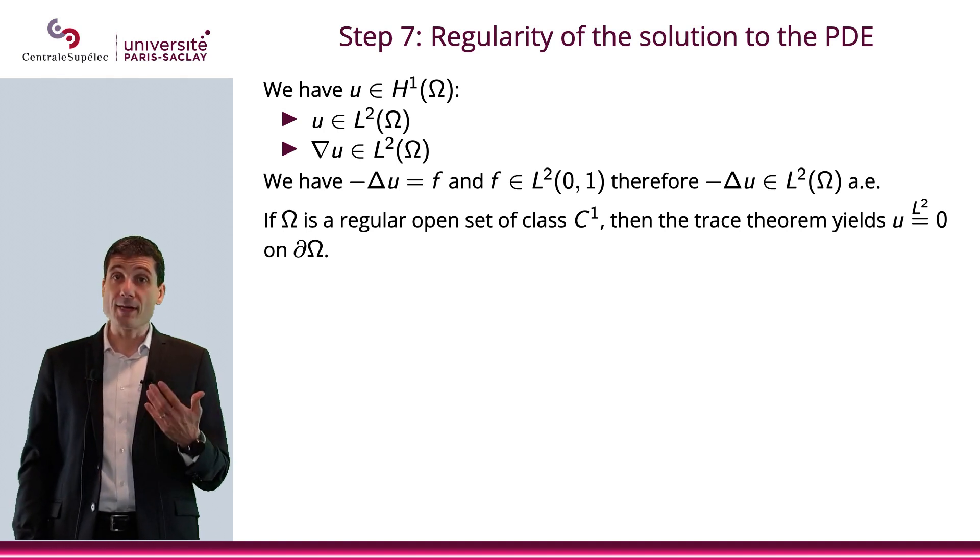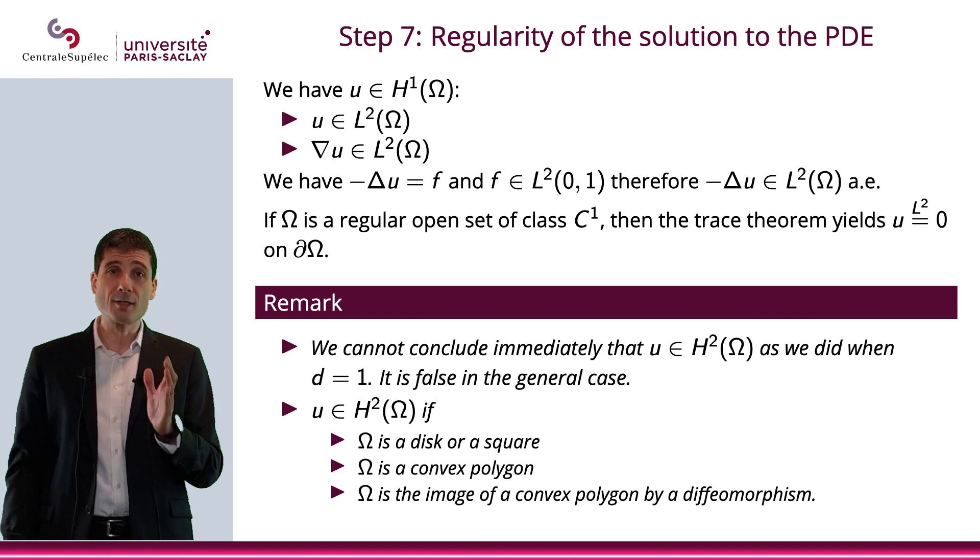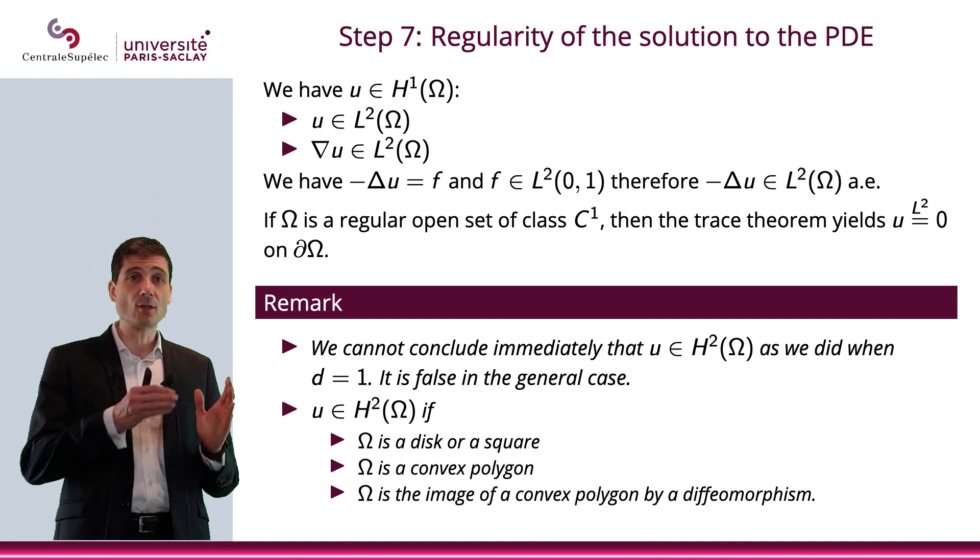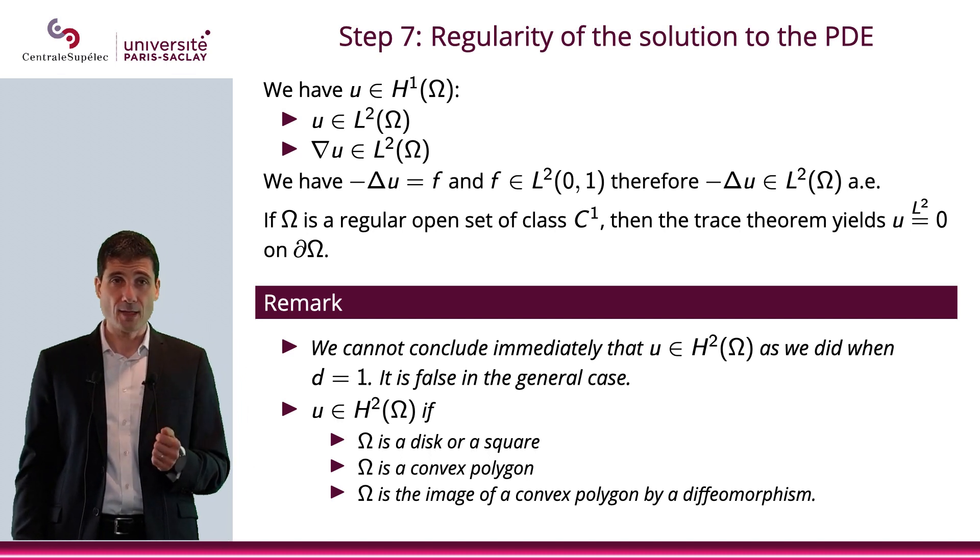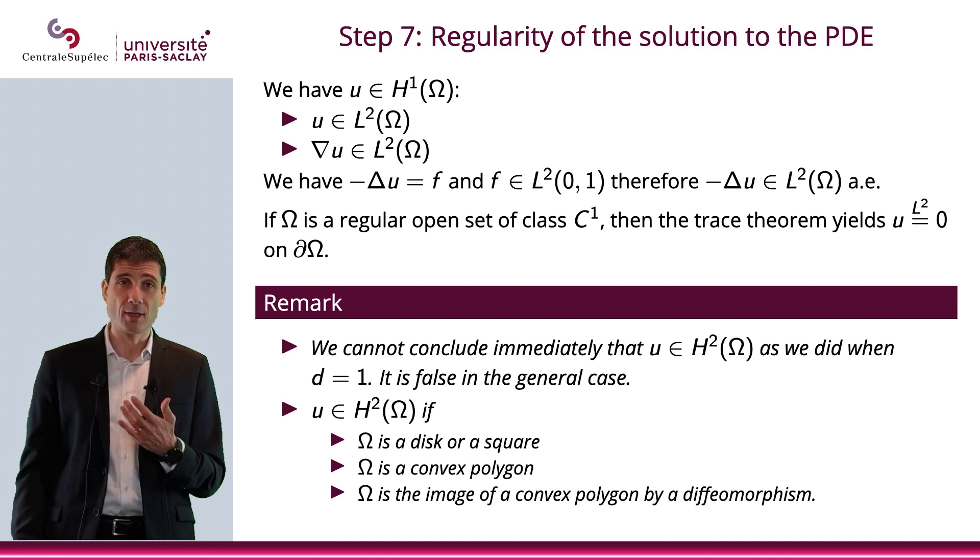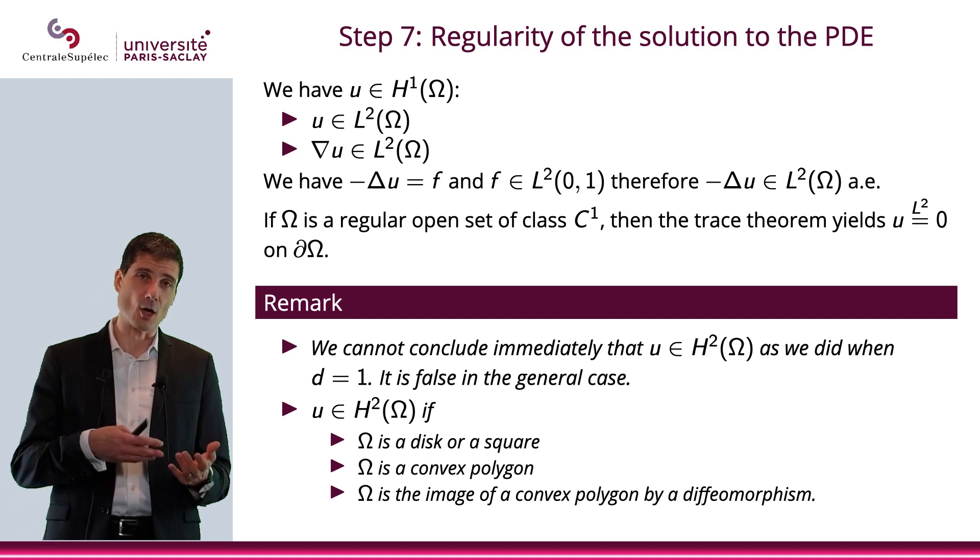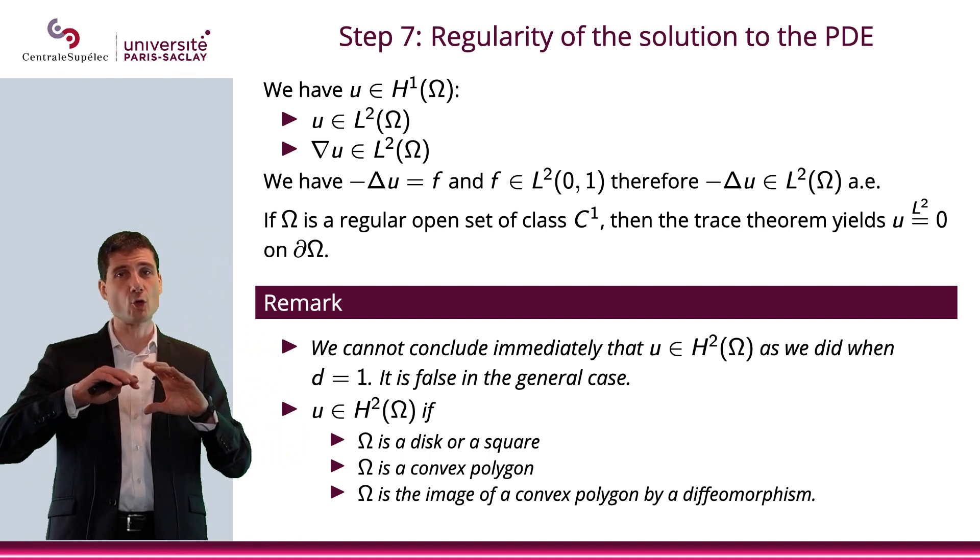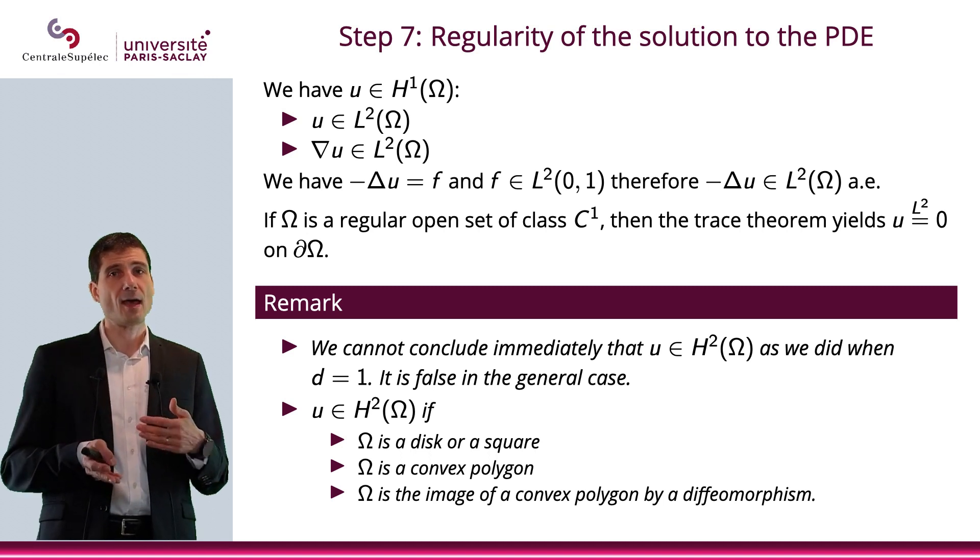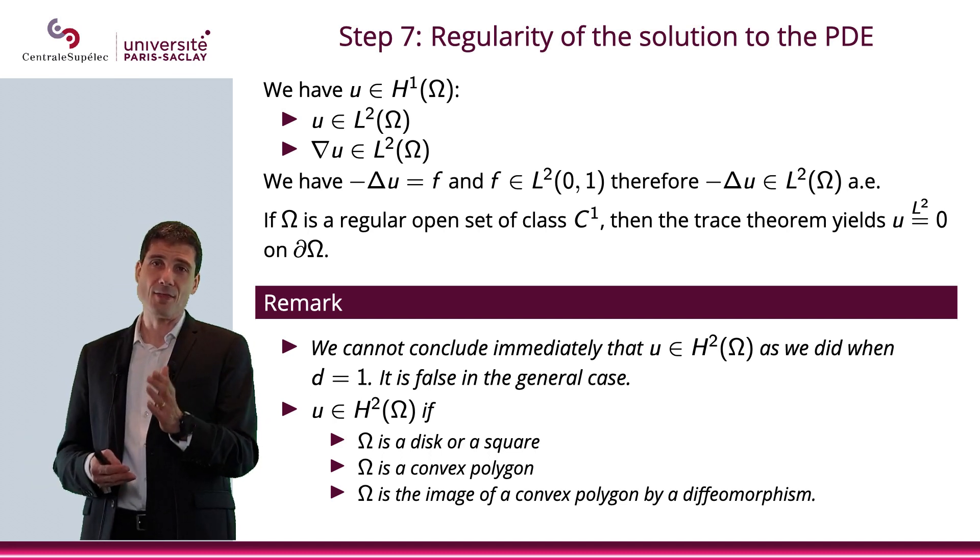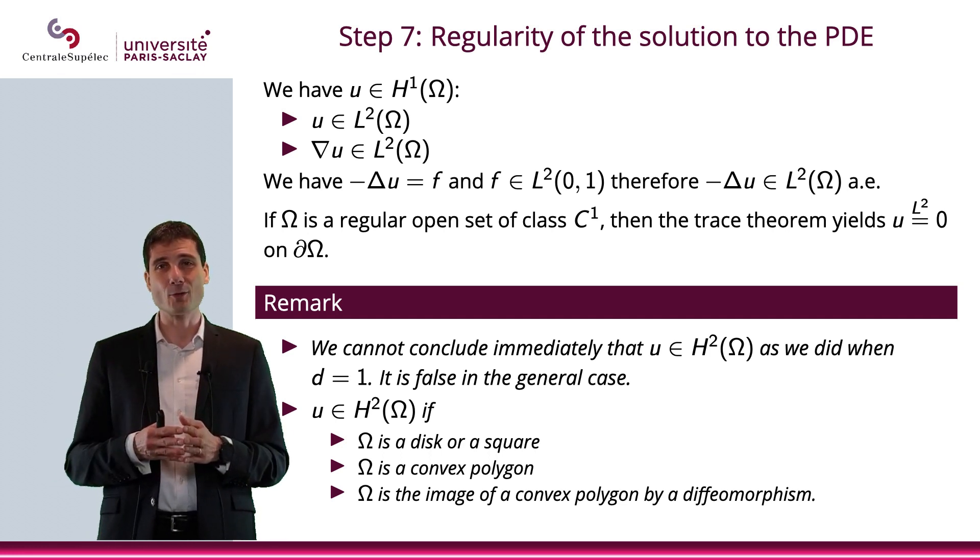That is a little bit of a problem. We can guarantee that u equals 0 on the boundary, but we cannot go back to u in H^2. Now, there are cases where we can. We're not going to prove it, but I'm just going to state it. We cannot conclude that u is in H^2. But if omega is a disk or a square, then we actually can say that u is in H^2. Same if omega is a convex polygon or if omega is the image of a convex polygon by a diffeomorphism. So if omega is not too crazy, then we will be able to recover the fact that u is in H^2.